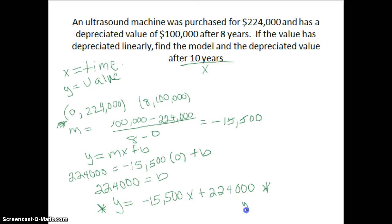So I just use my model. I have y equals negative 15,500 times my x of 10 plus 224,000. And again, put all that into my calculator just as it is and it gives me my answer. So the depreciated value of y is going to be $69,000 in 10 years.